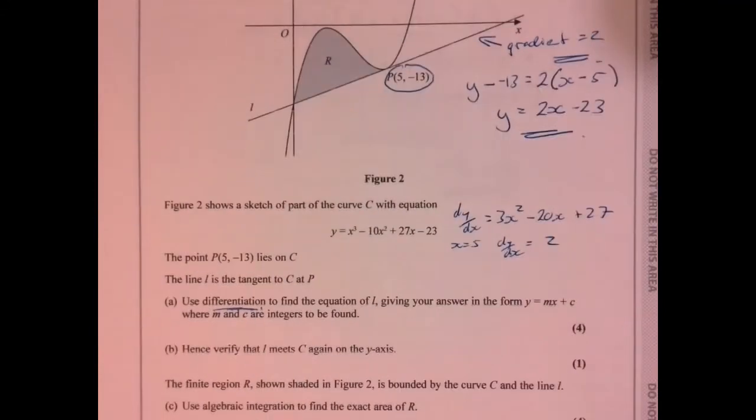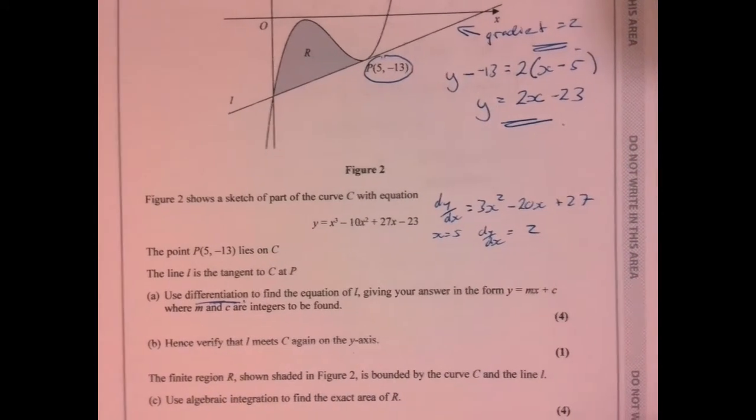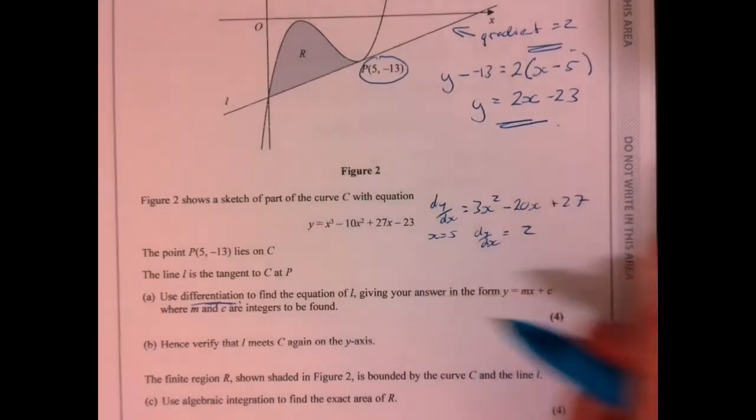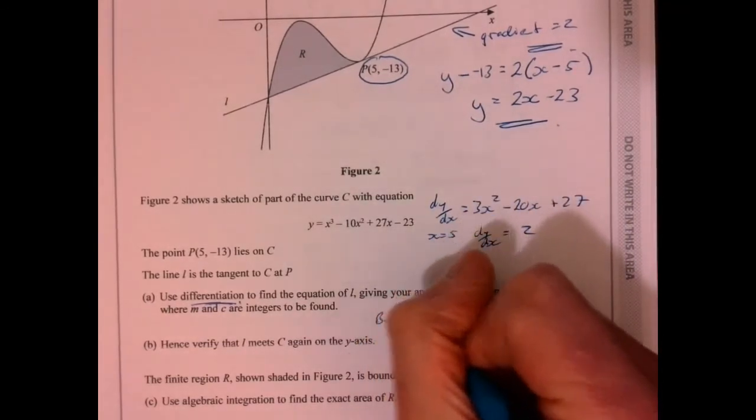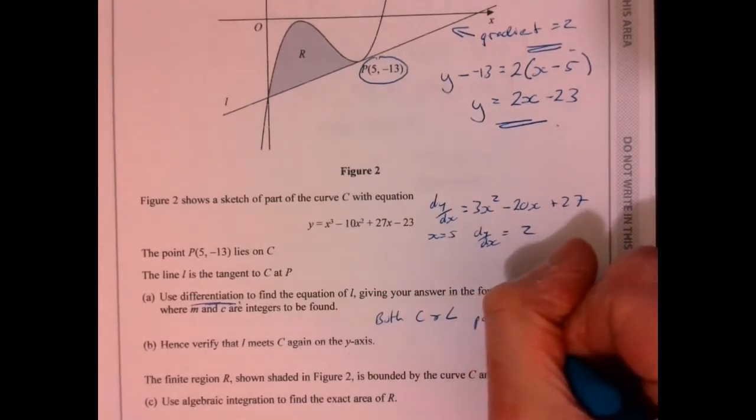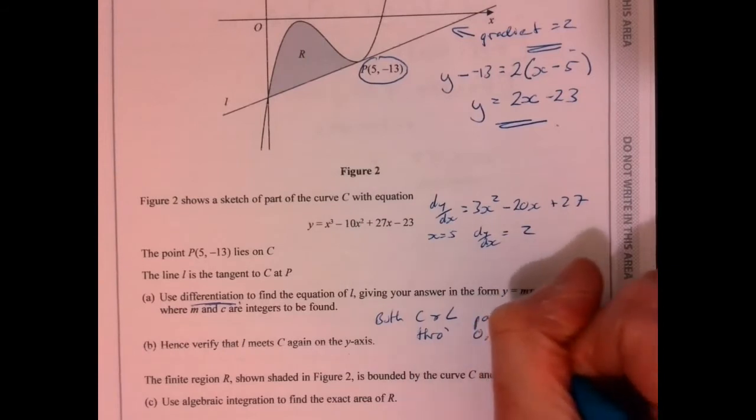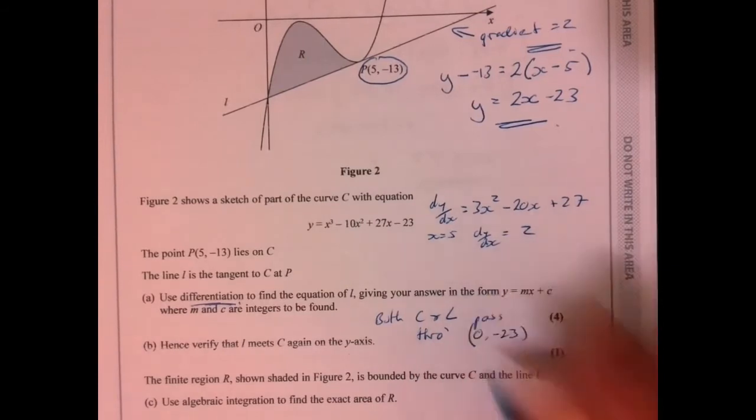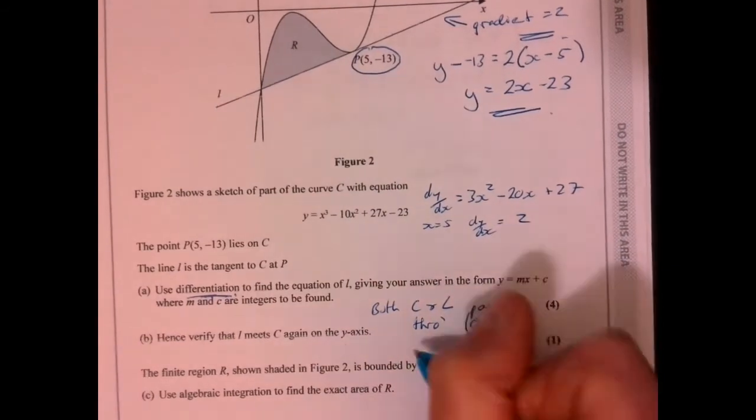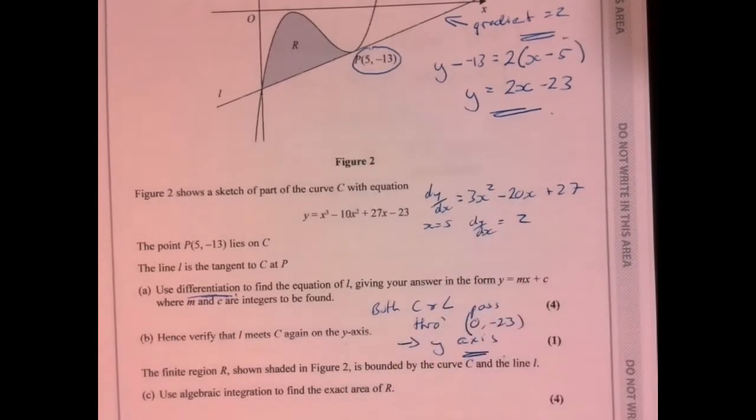Now part B says, hence verify that L meets C again on the y-axis. That's fine. We can just say, well look, both C and L pass through 0 minus 23. So they must be on the y-axis. They must meet just there.